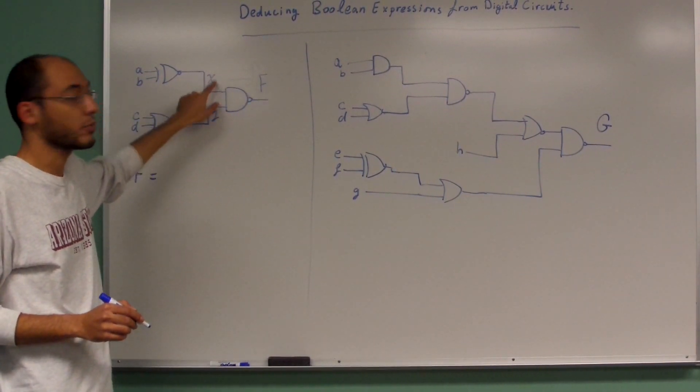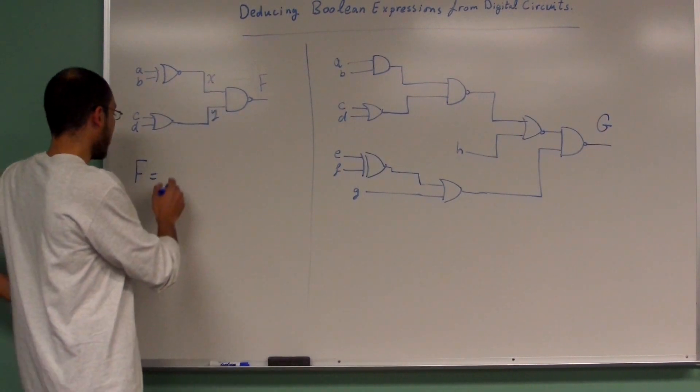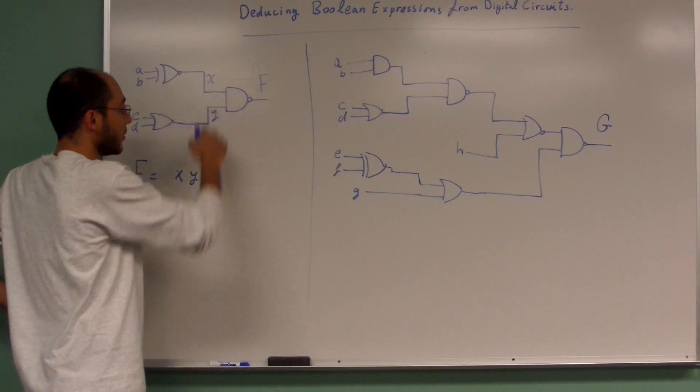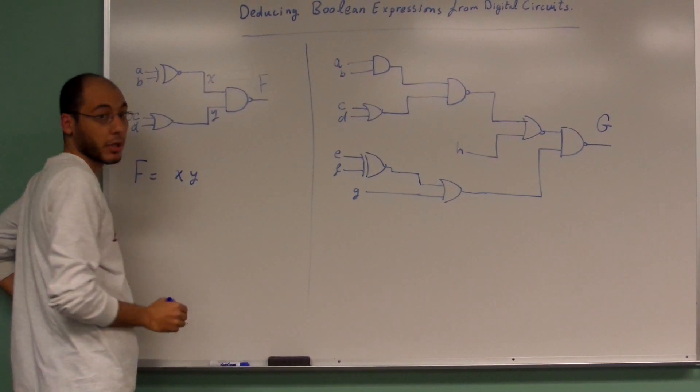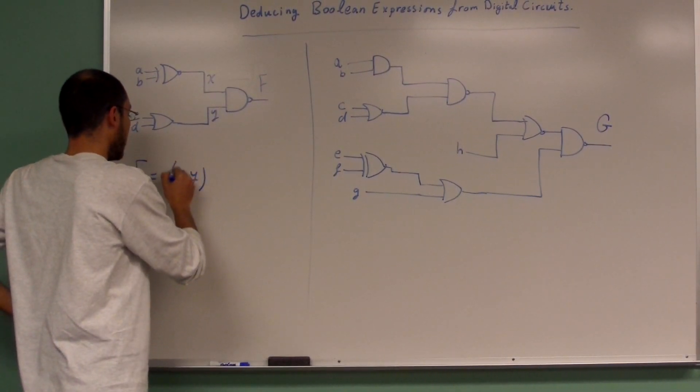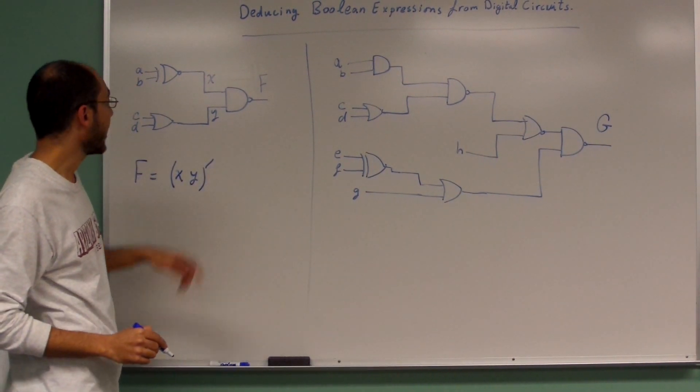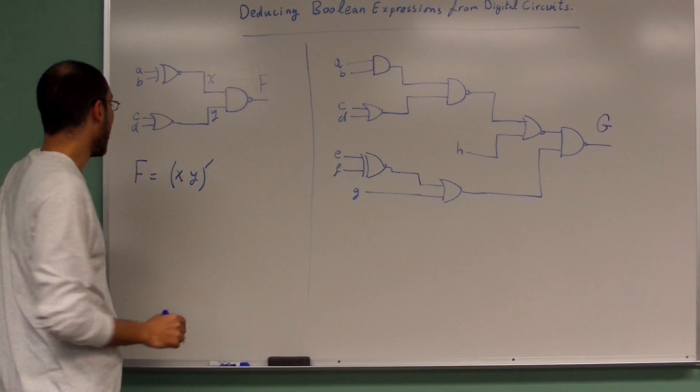What is the value of F in terms of X and Y? If you look you find that X and Y are ANDed together, so they're multiplied and then we have bar. That's an AND gate, right?